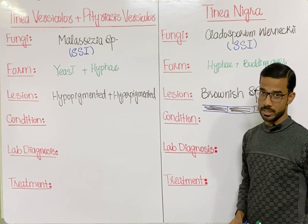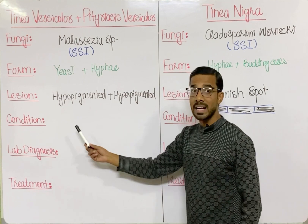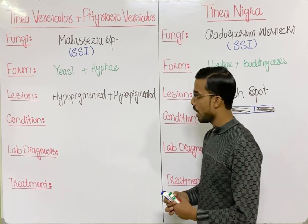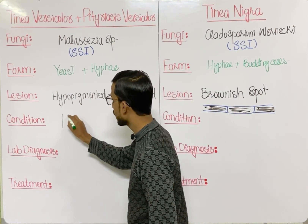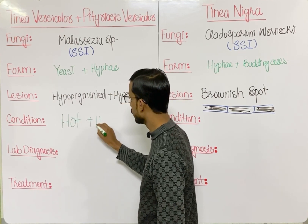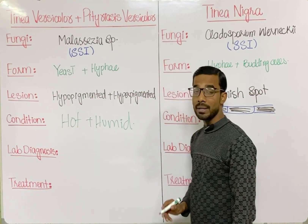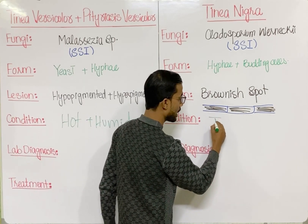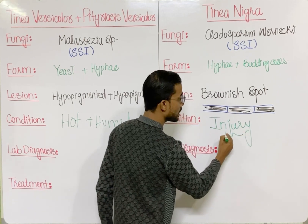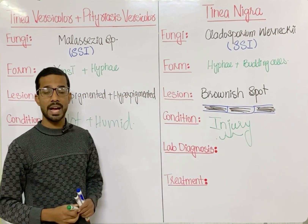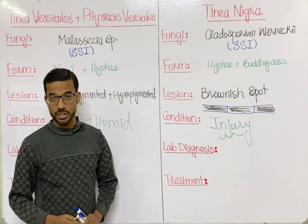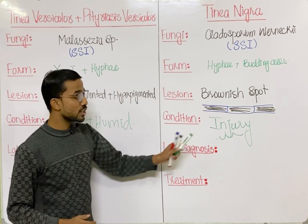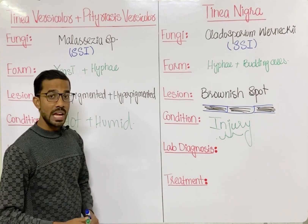The conditions favorable to Malassezia species, which cause Tinea Versicolor, are hot and humid conditions. In Tinea Nigra, the favorable condition is injury, because Cladosporium vernici is present in soil — when someone is injured, the fungus enters the body through that injury.